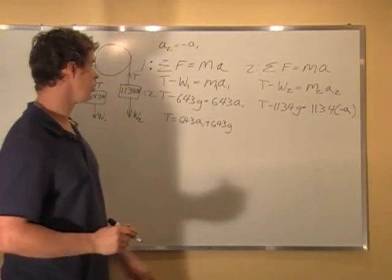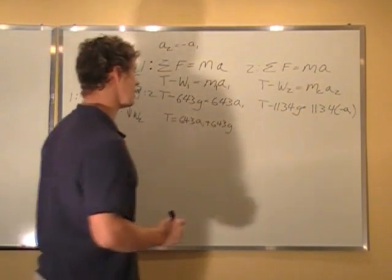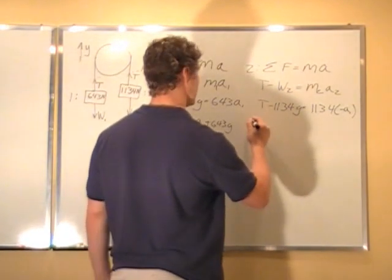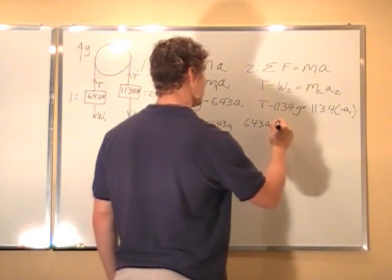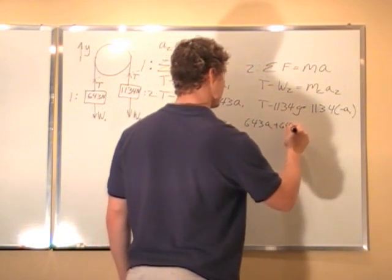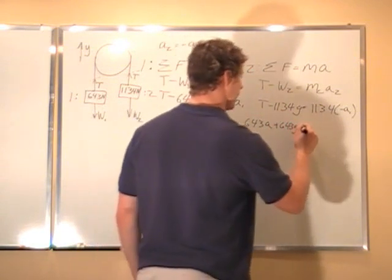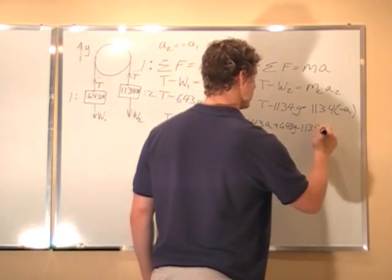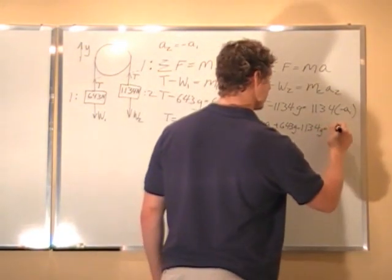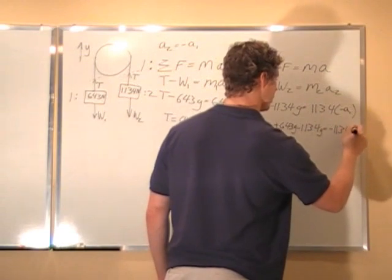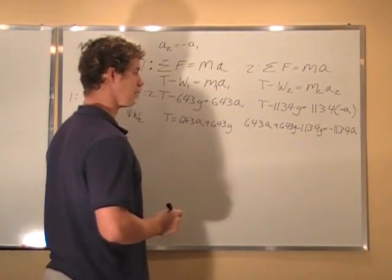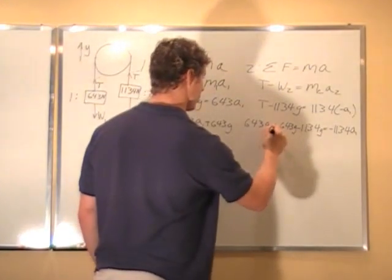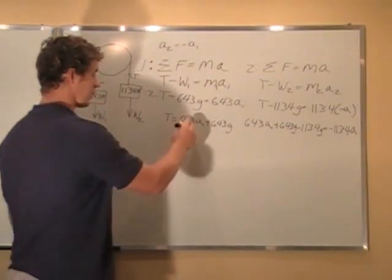And so now all I have to do is plug that into this t here. So I have 643 a1 plus 643 g minus 1134 g equals negative 1134 acceleration 1. So all I have to do is combine. This was a1 because I plug it from here.